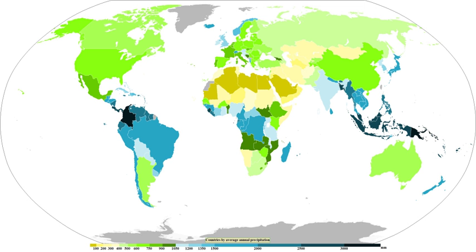Raindrops have sizes ranging from 0.1 mm to 9 mm mean diameter, above which they tend to break up. Smaller drops are called cloud droplets, and their shape is spherical. As a raindrop increases in size, its shape becomes more oblate, with its largest cross-section facing the oncoming airflow. Contrary to the cartoon pictures of raindrops, their shape does not resemble a teardrop.